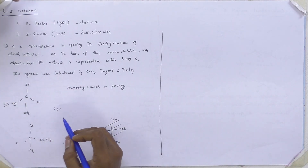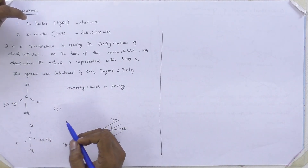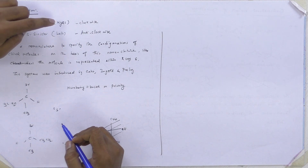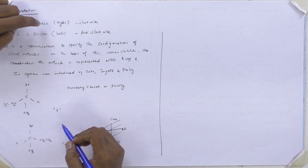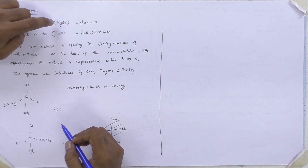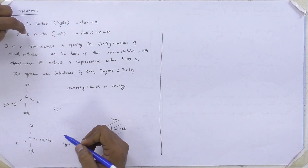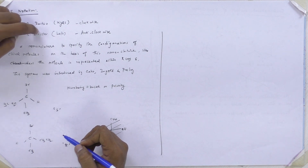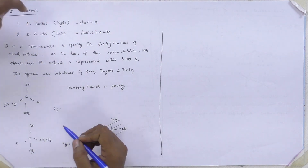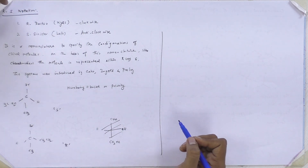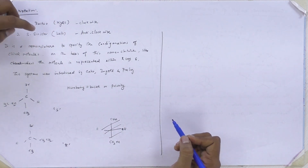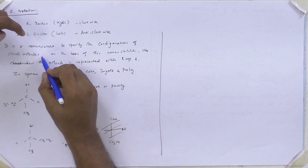So the next topic is RS notation. R means rectus, which means right side — that is clockwise rotation. Similarly, S is sinister, a word from German which means left — that is anti-clockwise rotation. It is used in RS notation as a nomenclature system to specify the configuration of chiral molecules.